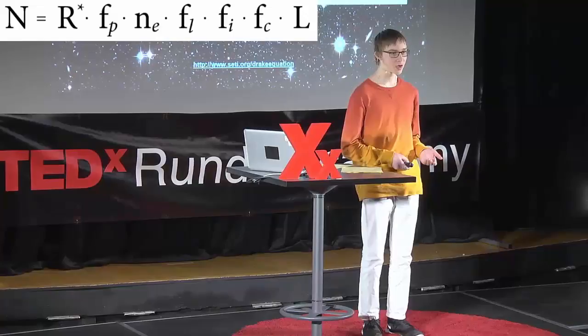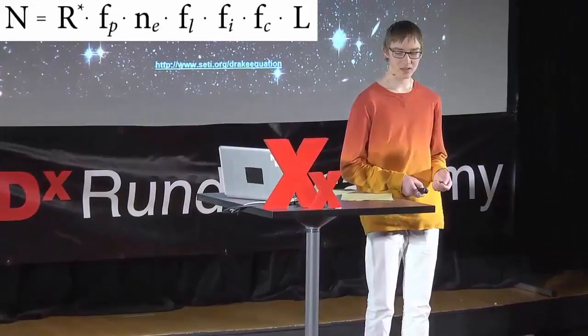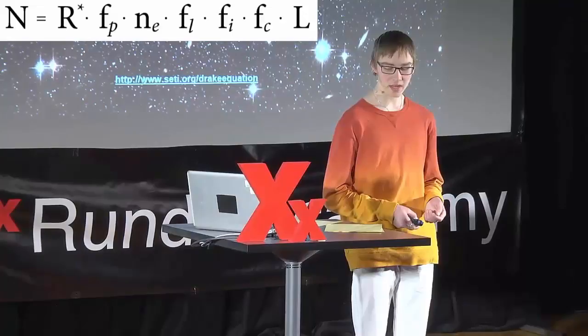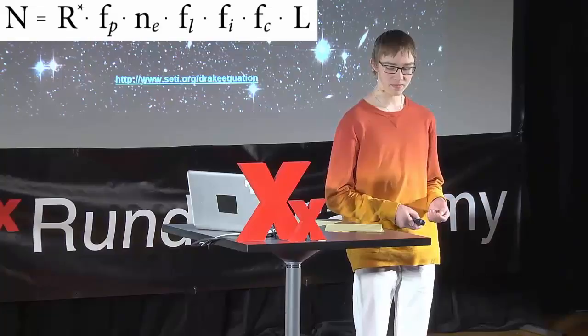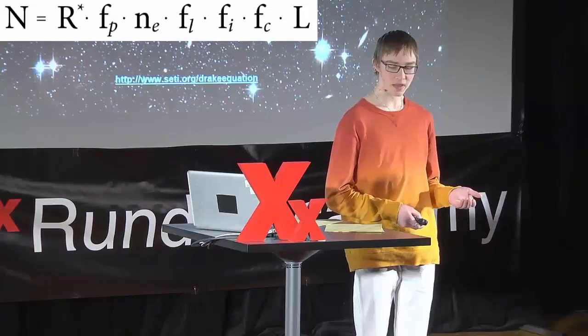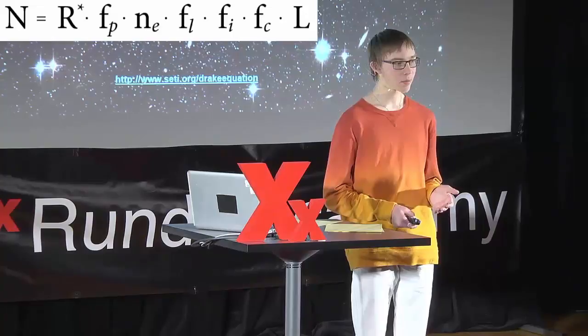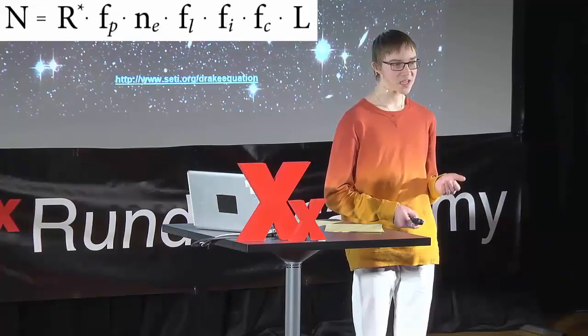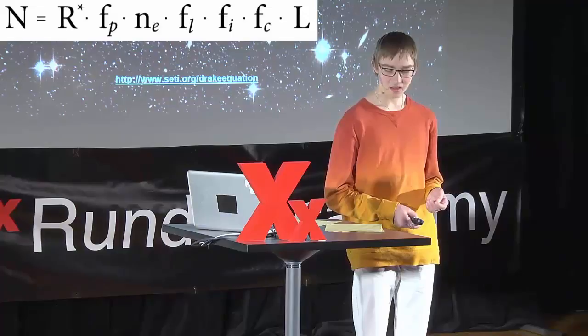N stands for the number of civilizations in our galaxy where radio communications might be possible. R represents the average rate at which stars are produced in our galaxy. FP is the fraction of those stars which have planets. NE is the amount of those planets which can support life. FL is the fraction of the planets which can support life that will go on to develop life. FI is the fraction of planets which develop life where that life will become intelligent. FC is the fraction of civilizations which develop technology to send signs of their existence into space. And L is the length of time it takes for these civilizations to release signs into space.